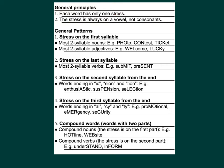Let's see the general patterns. Point 1: Stress on the first syllable. This applies to most two-syllable nouns, for example: photo, contest, ticket. It also applies to most two-syllable adjectives, for example: welcome, lucky.